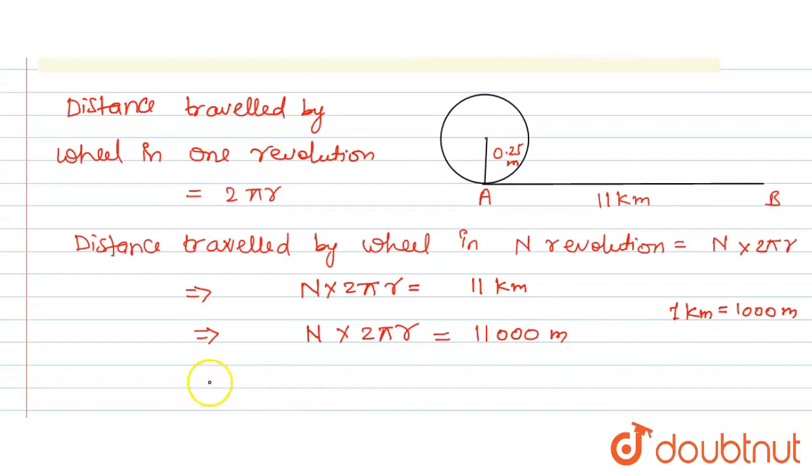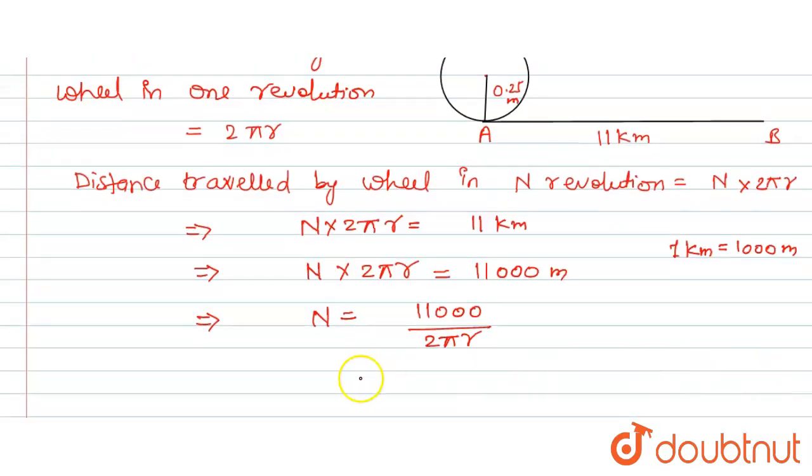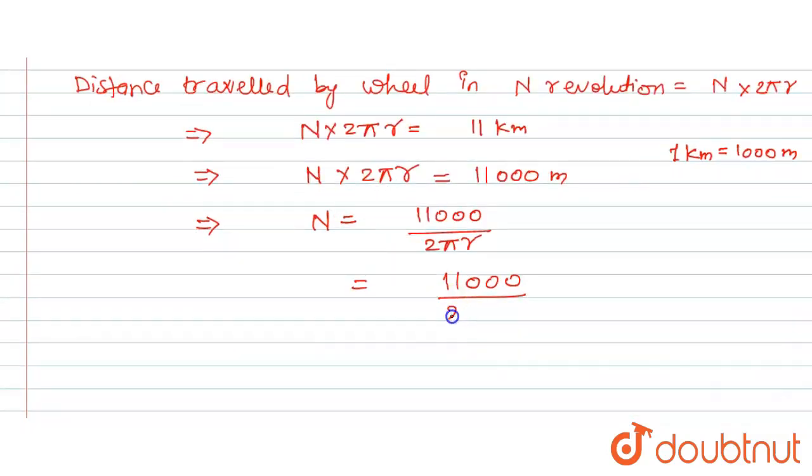Now we will put the values. We will take π as 22/7, so 2 × 22/7, and the radius is 0.25 meter, okay?